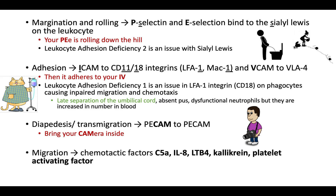So we went through your pee rolling down the hill for margination and rolling, for P-selectin and E-selectin. Then what happens to your pee? Your pee will adhere to your IV — I put a little sick cat here; I think of gross patients that pee on everything, and their pee is adhering to their IV. IV stands for ICAM and VCAM. So it's adhering: IV adhesion is ICAM and VCAM. ICAM adheres to CD11 and CD18 integrins, also called LFA-1 and MAC-1. There are a million names for everything in medicine, and this is no exception.